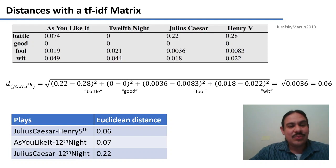If we calculate it for a few more pairs, we'll see that the distance between Julius Caesar and Henry V is 0.06. This is the distance between the two tragedies. The distance between the two comedies, As You Like It and Twelfth Night, is 0.07. So the tragedies are very close together. The comedies are very close together. But the distance between one of the tragedies, Julius Caesar, and one of the comedies, Twelfth Night, is three times as large, 0.22. So the tragedies are close together. The comedies are close together. But the comedies and the tragedies are relatively far apart.